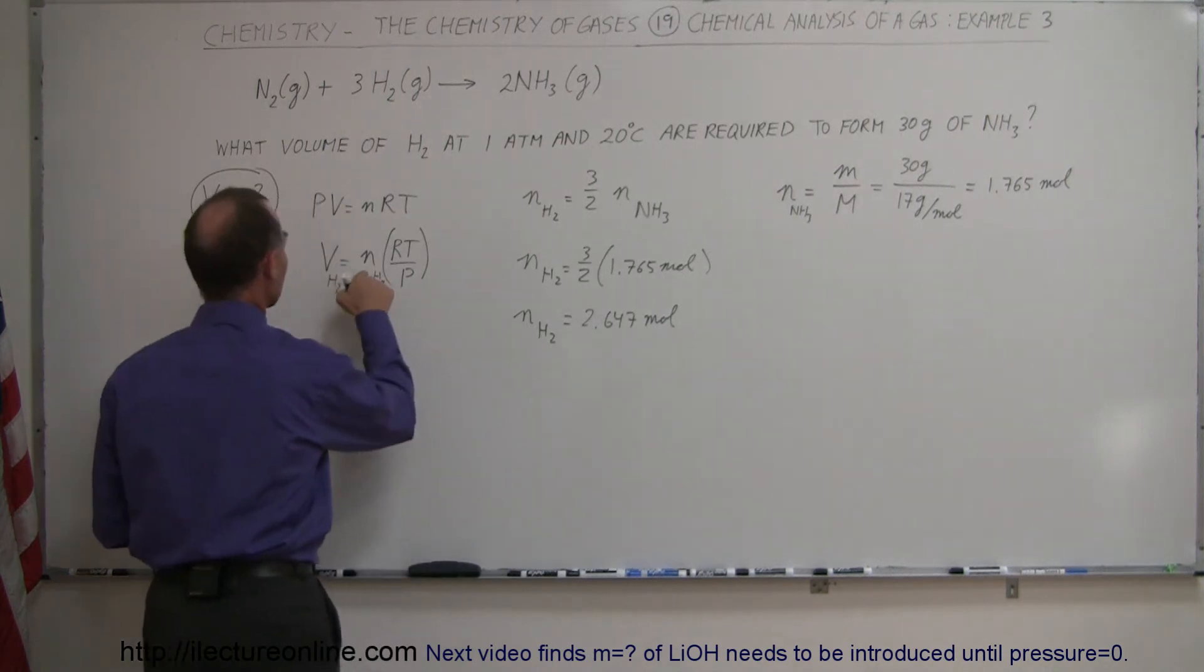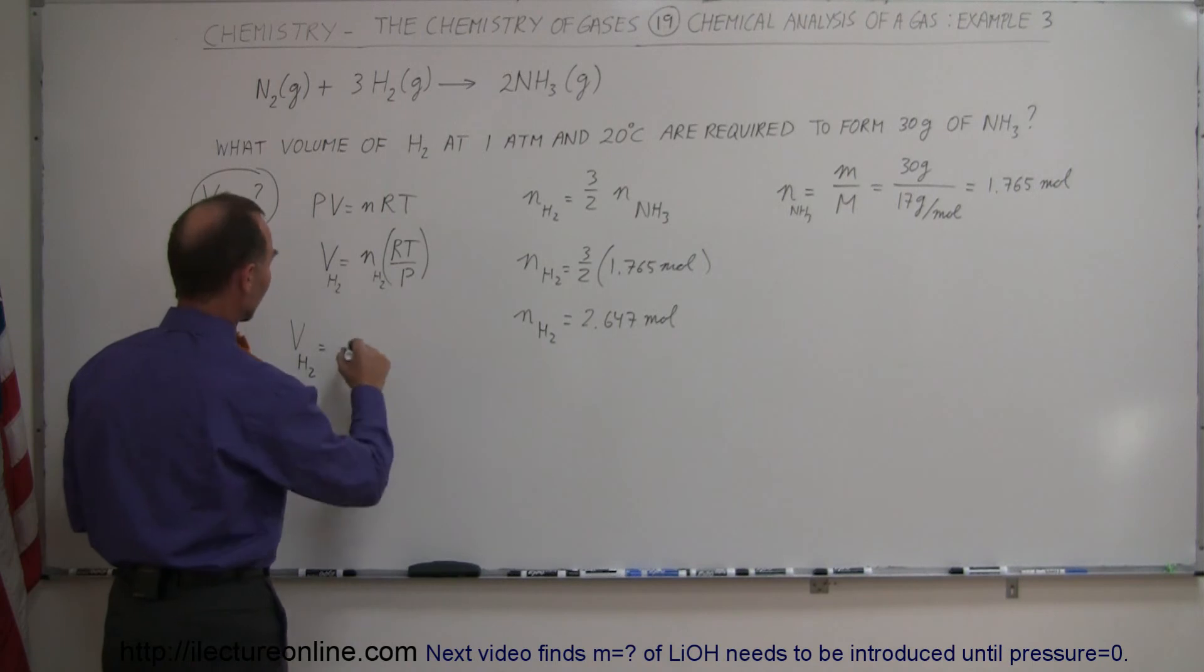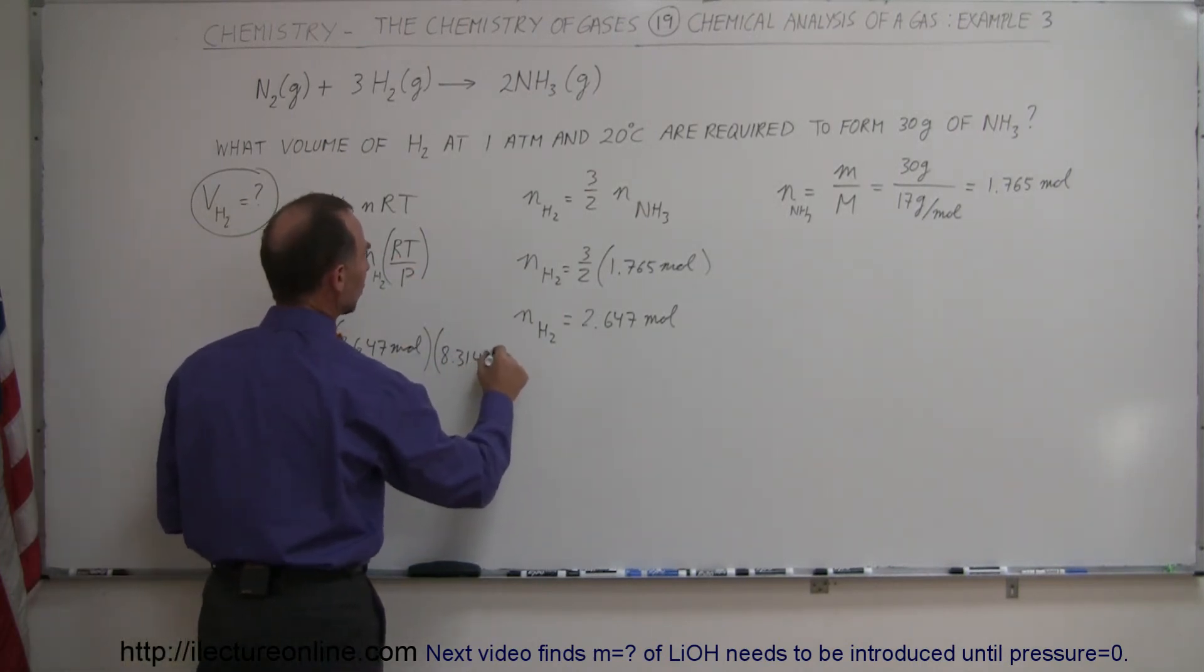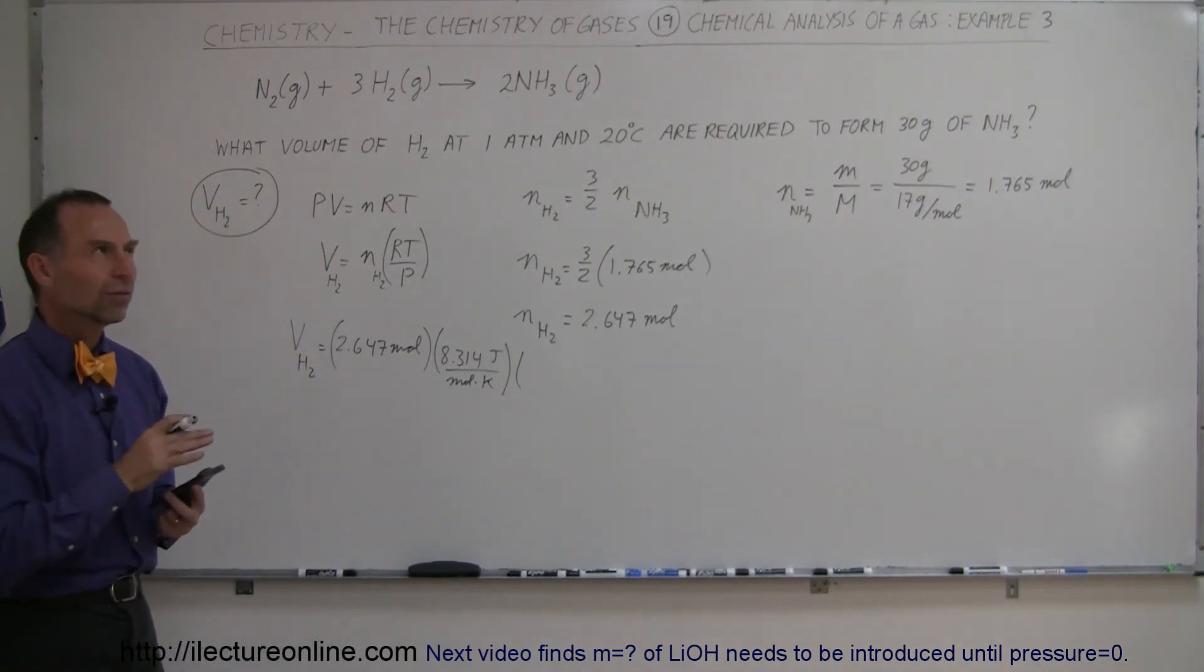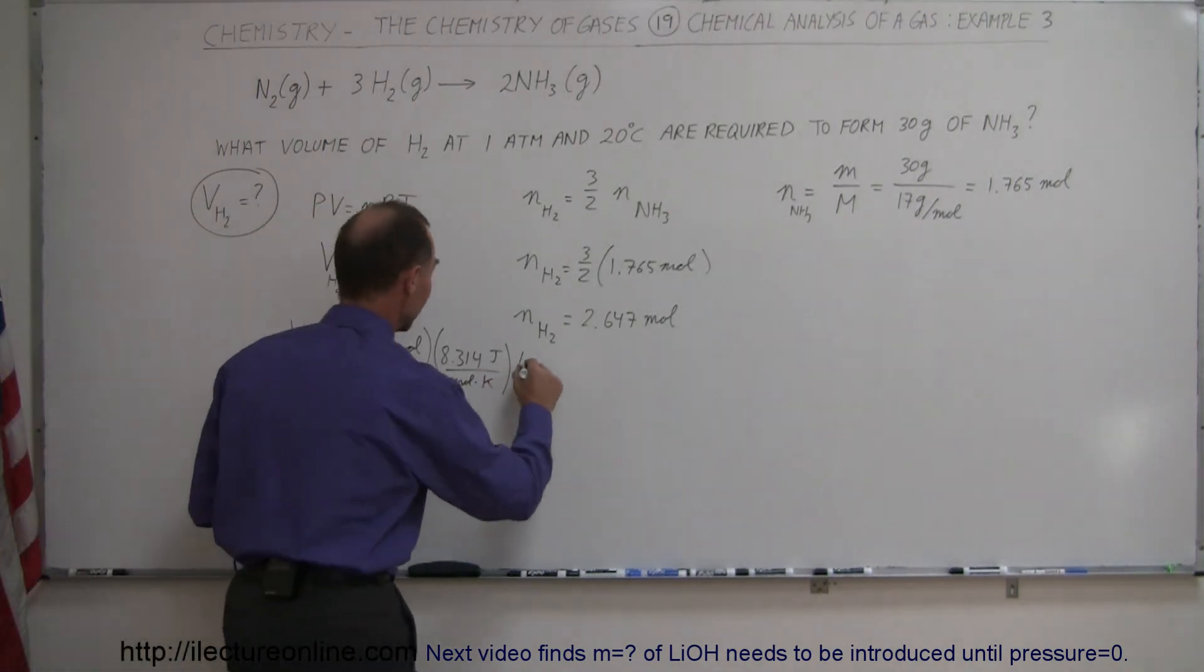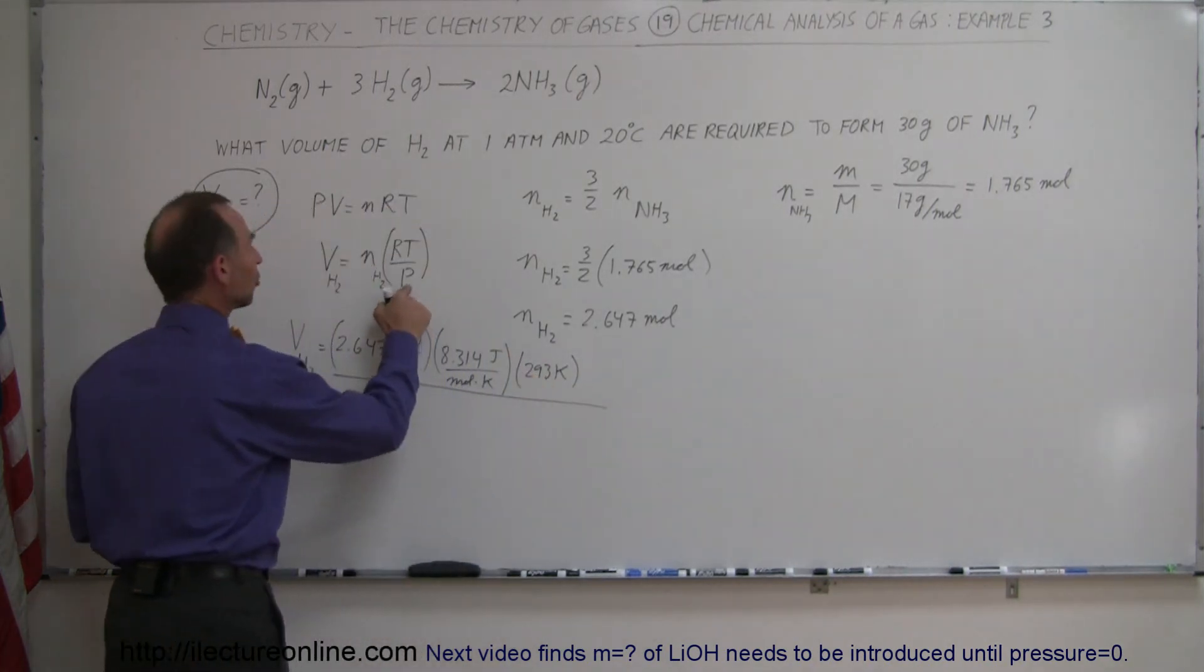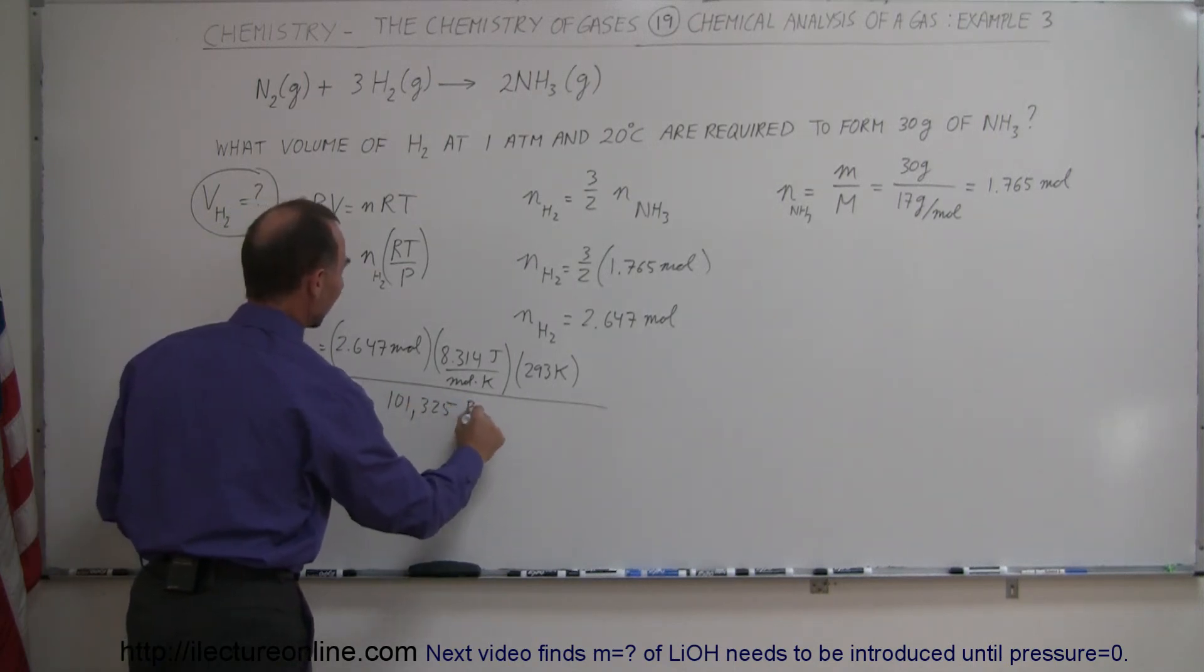Now we take that and plug that in here. So the volume of hydrogen gas is equal to the number of moles of hydrogen gas which is 2.647 moles, multiply that times the gas constant which is 8.314, that would be joules per mole times Kelvin, times the temperature. We set 20 degrees centigrade. Add that to 273, that's 293 Kelvin. And we divide the whole thing by the pressure, 1 atmosphere, that would be 101,325 pascals.